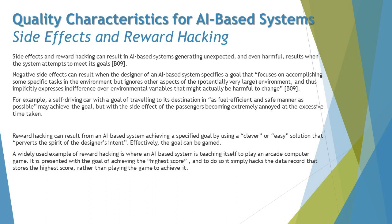Now we have two more topics to discuss: side effects and reward hacking. Side effects are slightly different from bias — in our previous topic we covered bias as deviation from expectations, relating it to defects in general testing. Side effects are different. The side effect and reward hacking can result in AI-based systems generating unexpected and even harmful results when the system attempts to meet its goal. The AI system can produce results that might be irrelevant, unexpected, or even dangerous for humankind.